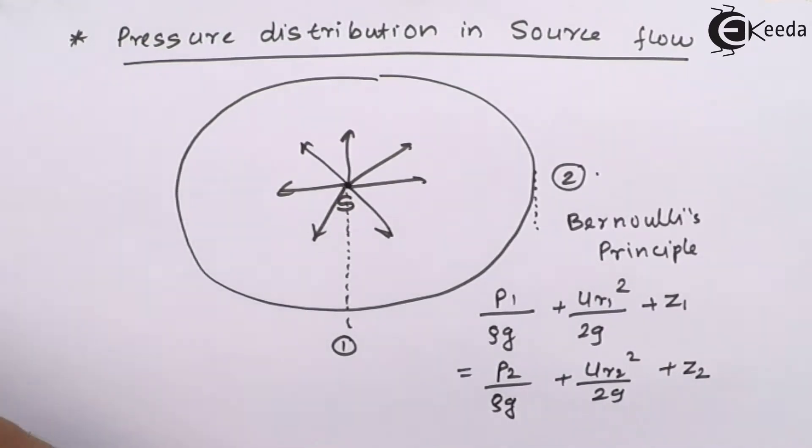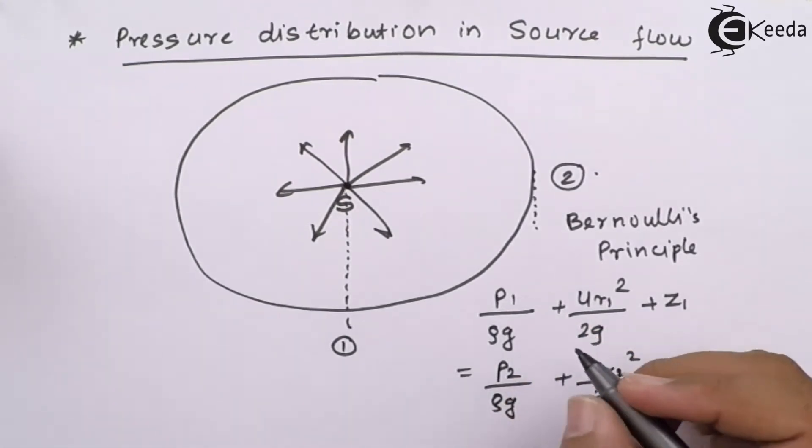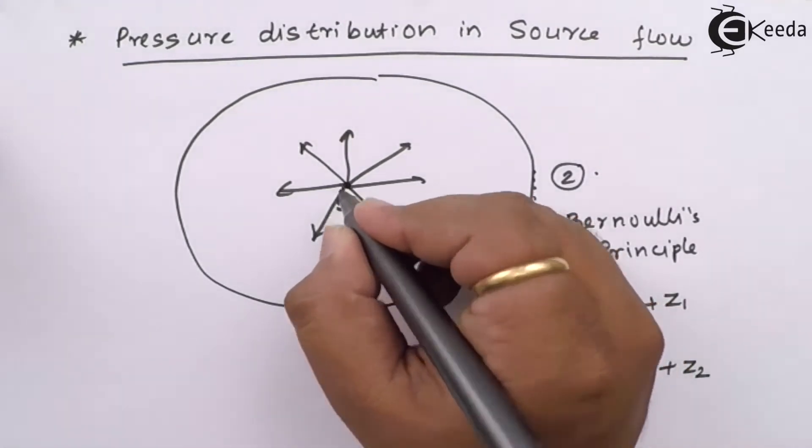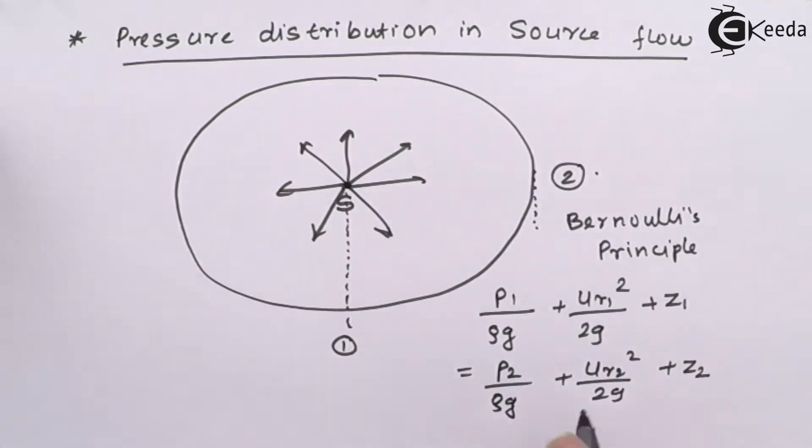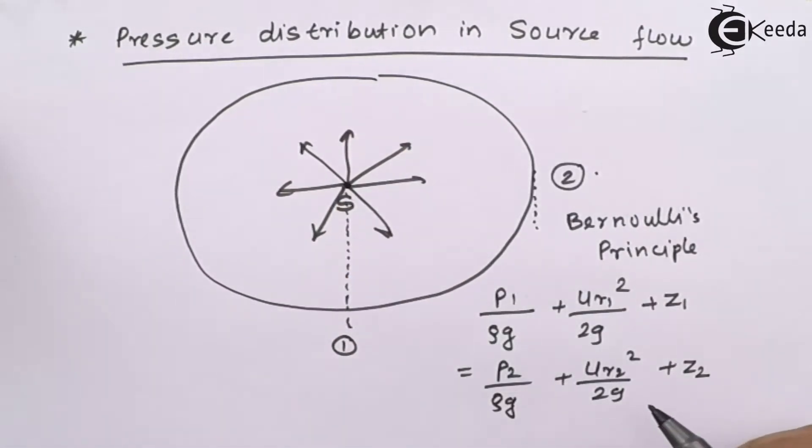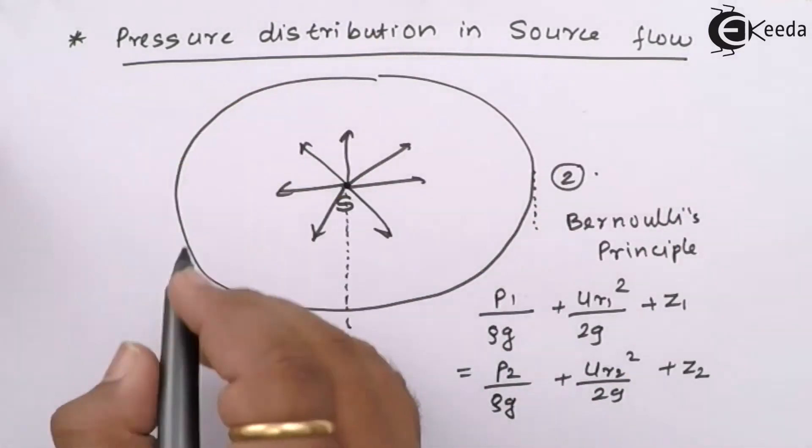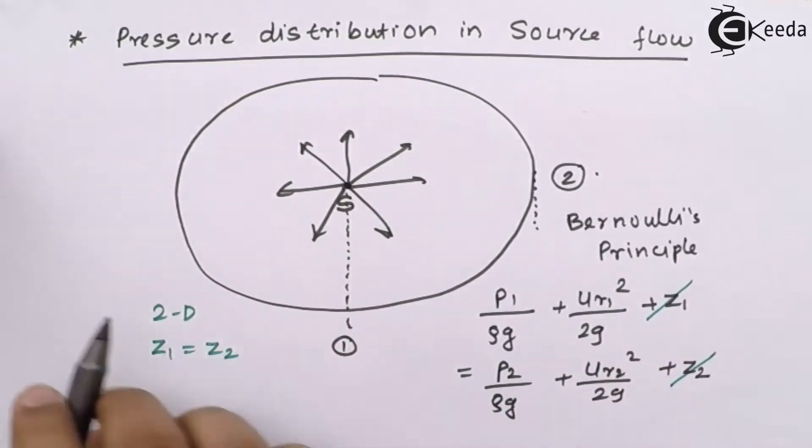Let us see what are all these terms. The first term is pressure energy head—the amount of pressure energy at the source. The second term is kinetic energy head—the amount of energy it governs during the flow. Third is the potential energy head—the amount of potential at a given point. Since this is a two-dimensional flow, your z1 will equal z2.